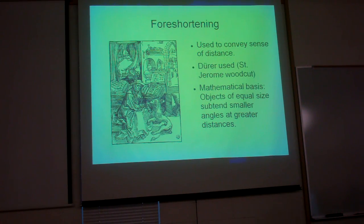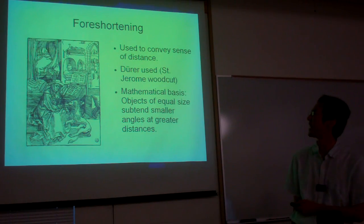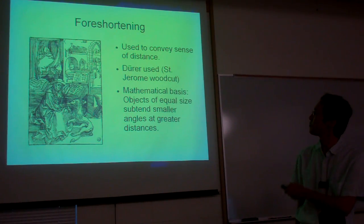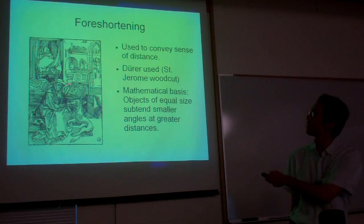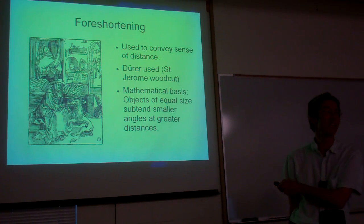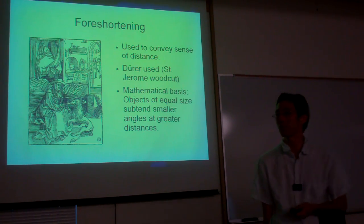Dürer is very familiar with the idea of foreshortening. This is one of Dürer's early woodcuts — I believe this is Saint Jerome. What we see is that to convey the sense of distance, objects in the background appear smaller than objects in the foreground. So Dürer is very familiar with the use of foreshortening.